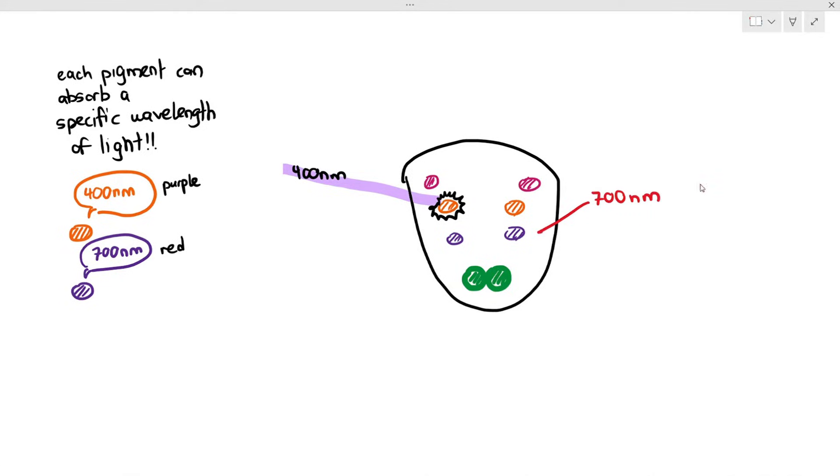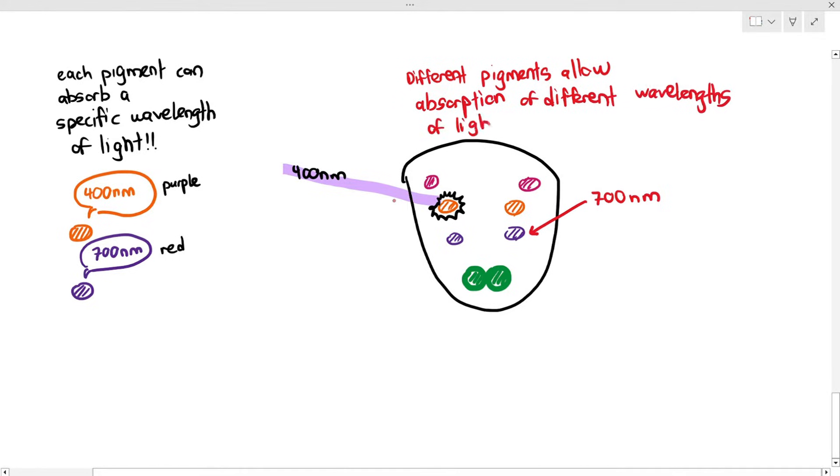In another case, the purple pigment is not useless, because the purple pigment can help to absorb different wavelengths of light. If the question asks you why do photosystems have many different types of pigments, the reason is because they allow the absorption of different wavelengths of light to maximize the absorption of light, which is in a range of 400 nanometers to 700 nanometers.